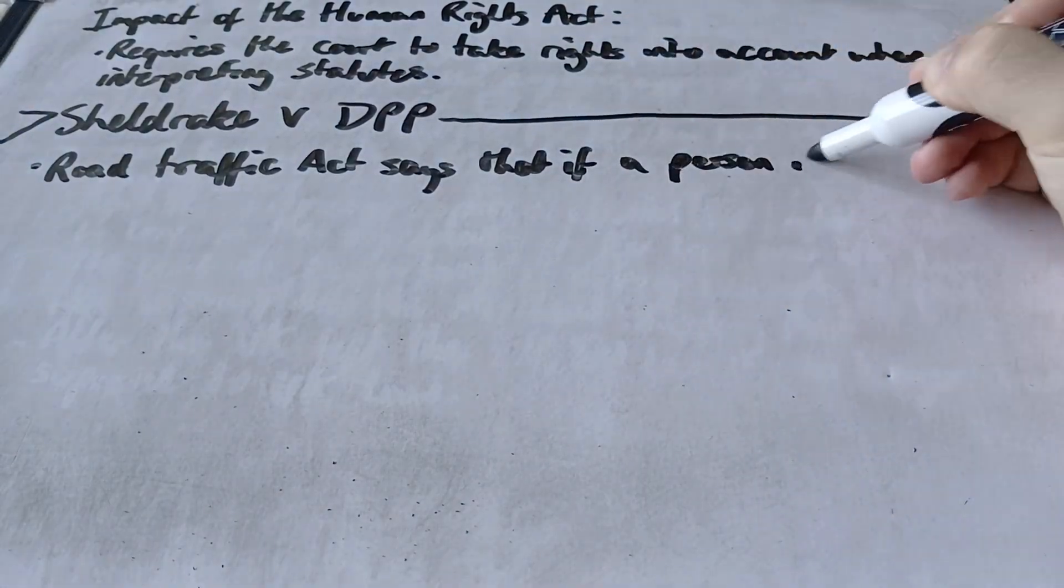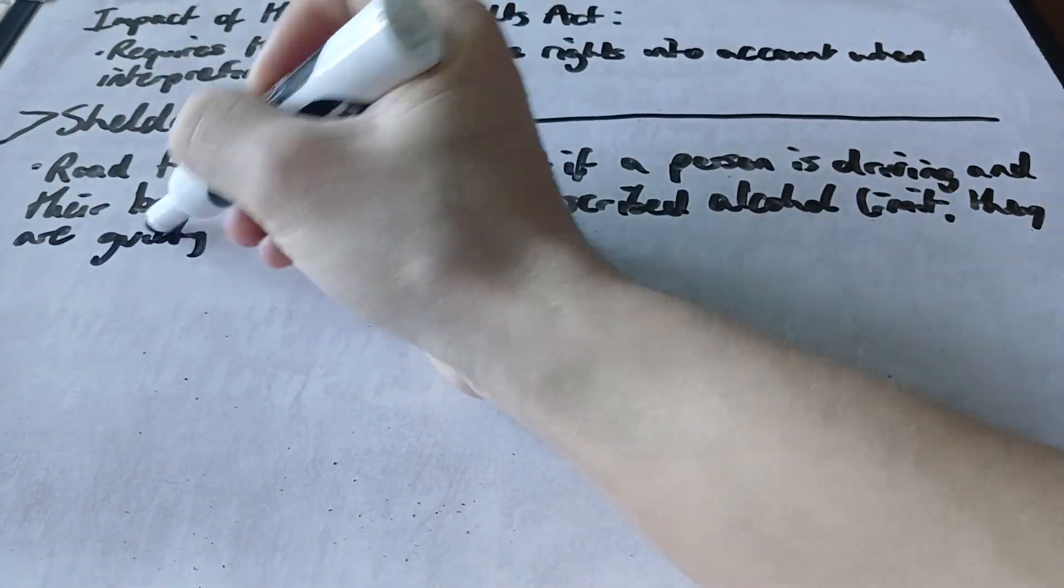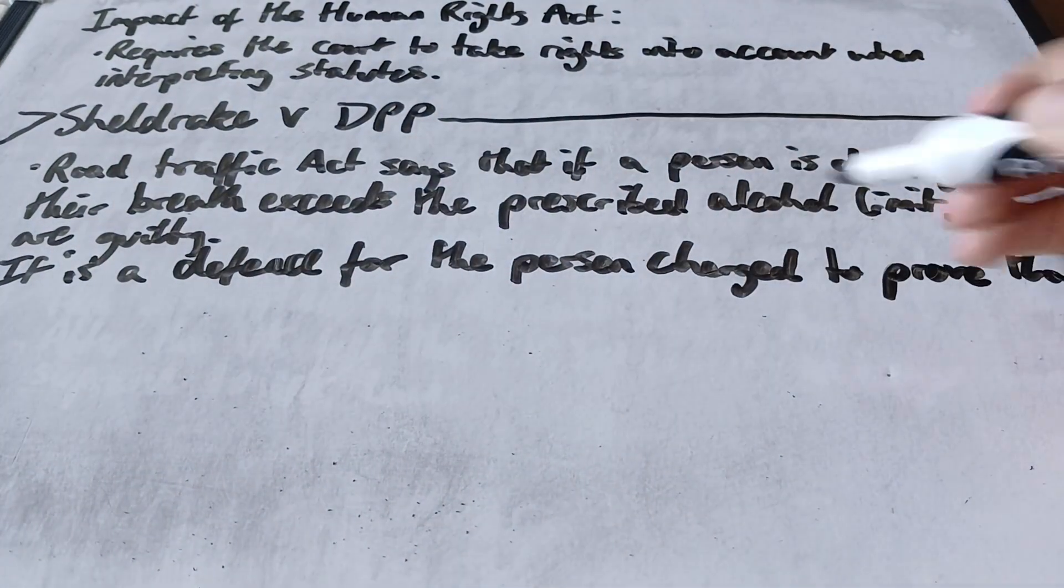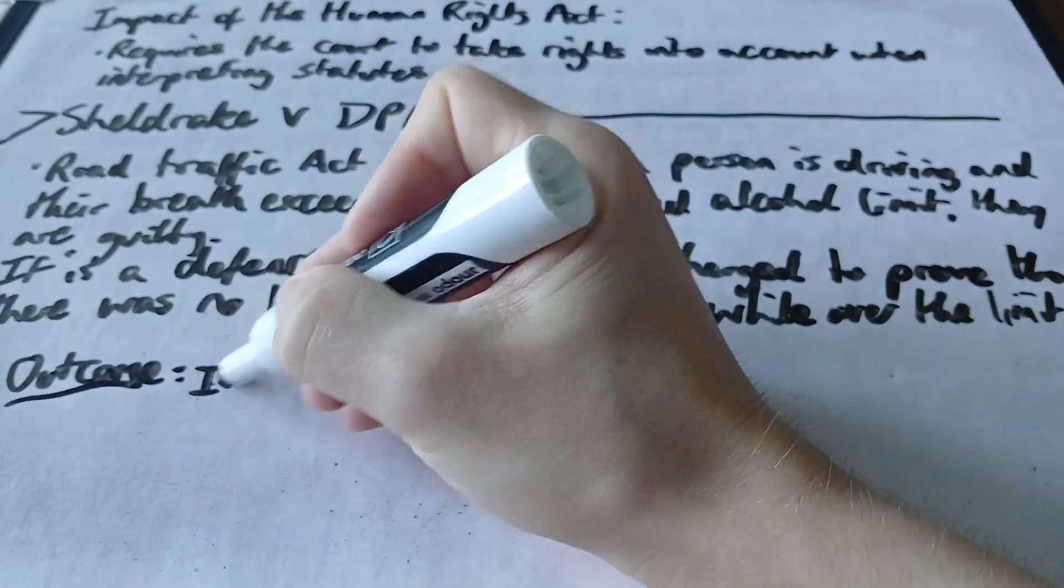Looking at the case Sheldrake v DPP. The Road Traffic Act says that if a person is driving and their breath exceeds the prescribed alcohol limit, they're guilty. It's a defence for the person charged to prove that there was no likelihood of driving while over the limit.